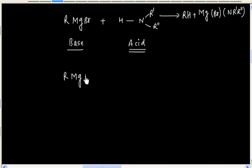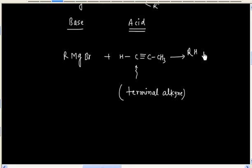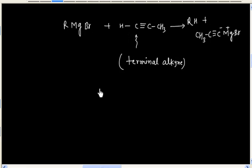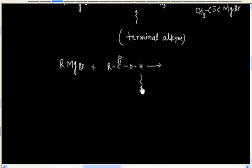Grignard reagent can react with a terminal alkyne. In the case of a terminal alkyne, we have acidic hydrogen, so we will have an acid-base reaction and finally alkane will be formed. It can also react with carboxylic acid. Carboxylic acid has acidic hydrogen.